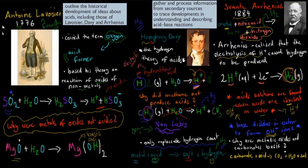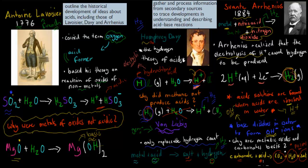Even though Arrhenius's theory is almost correct and we still have a very similar understanding today, there was still a problem with the pure ion theory. For example: why are metallic oxides and carbonates basic? If you have a carbonate and put it into an acid, you get carbon dioxide, water, and salt — there are no ions produced, even though we had an acid initially. So it seems we don't need ions present for something to be basic or acidic.